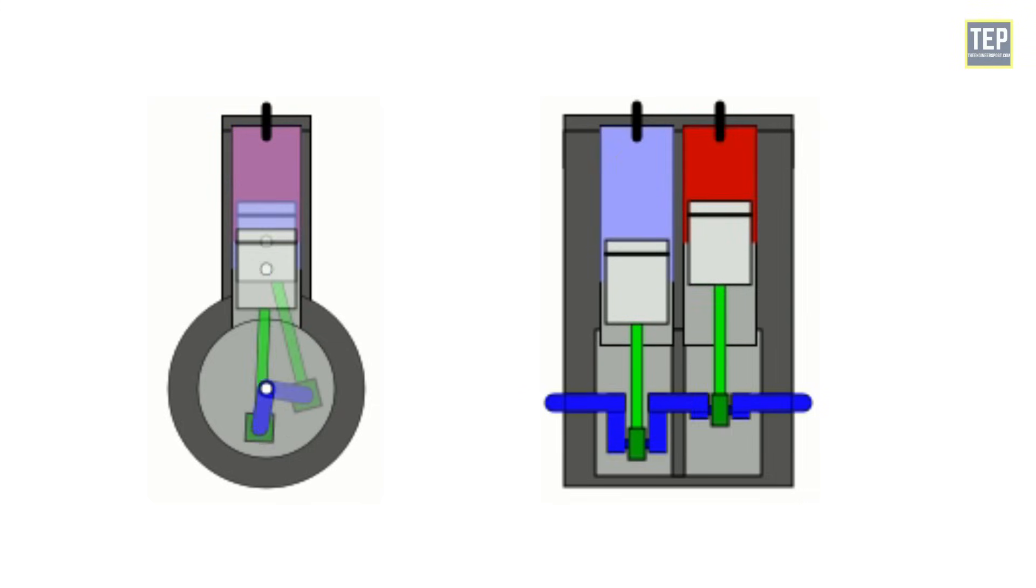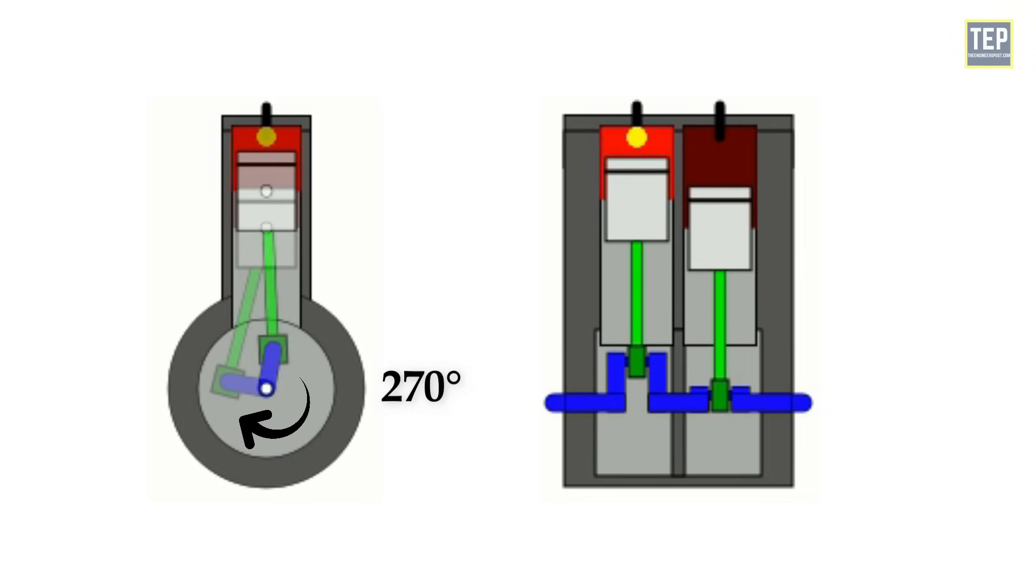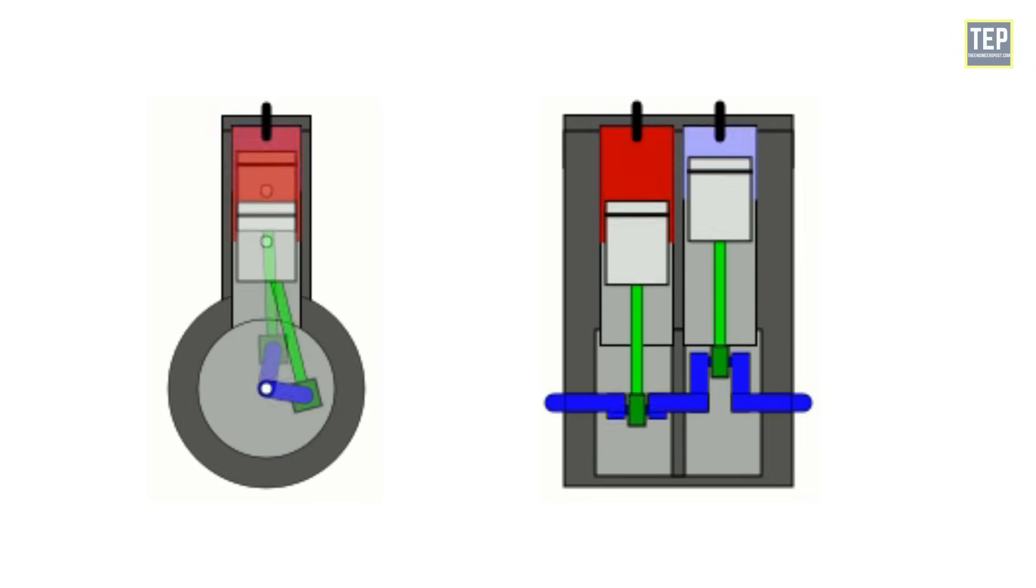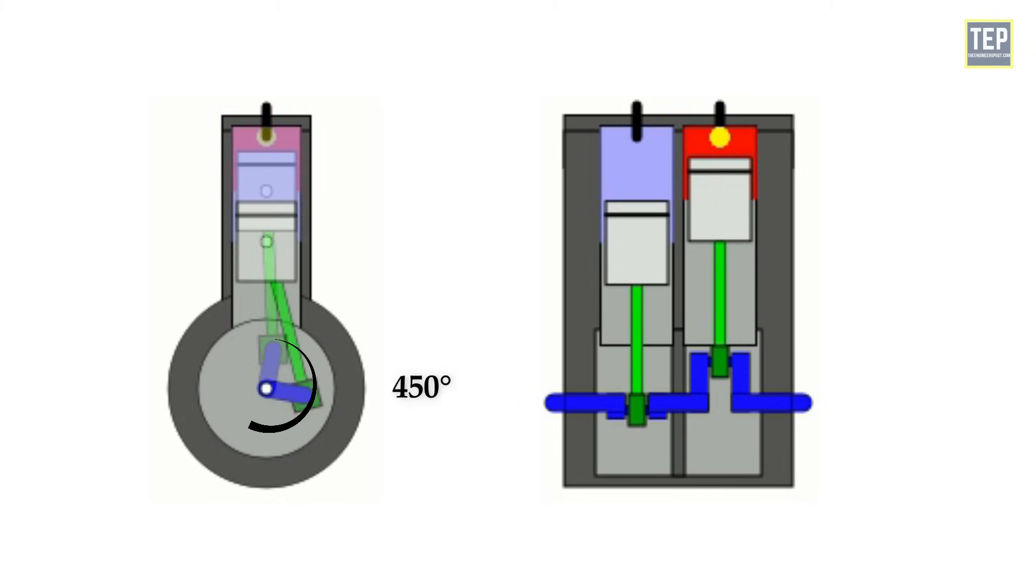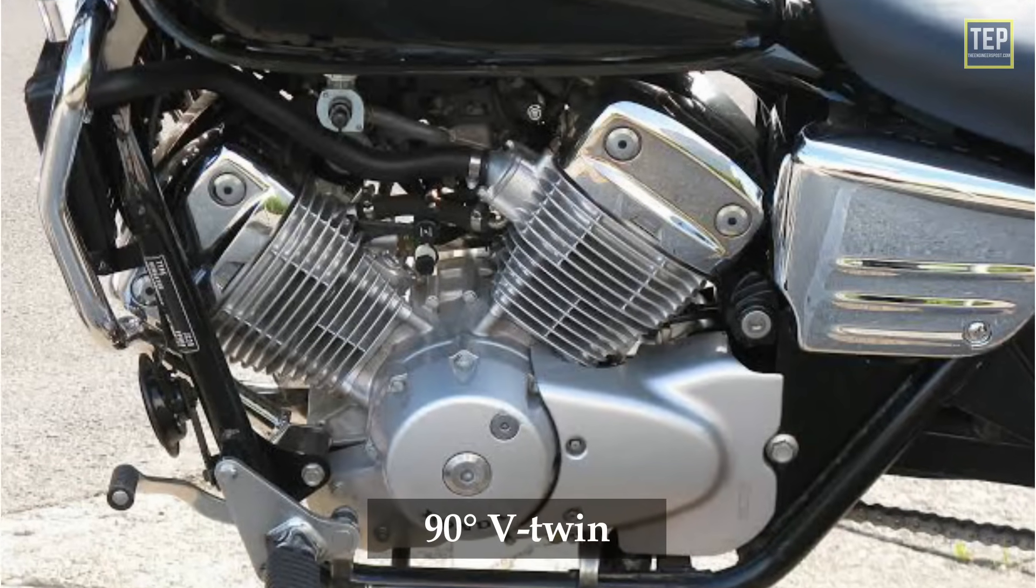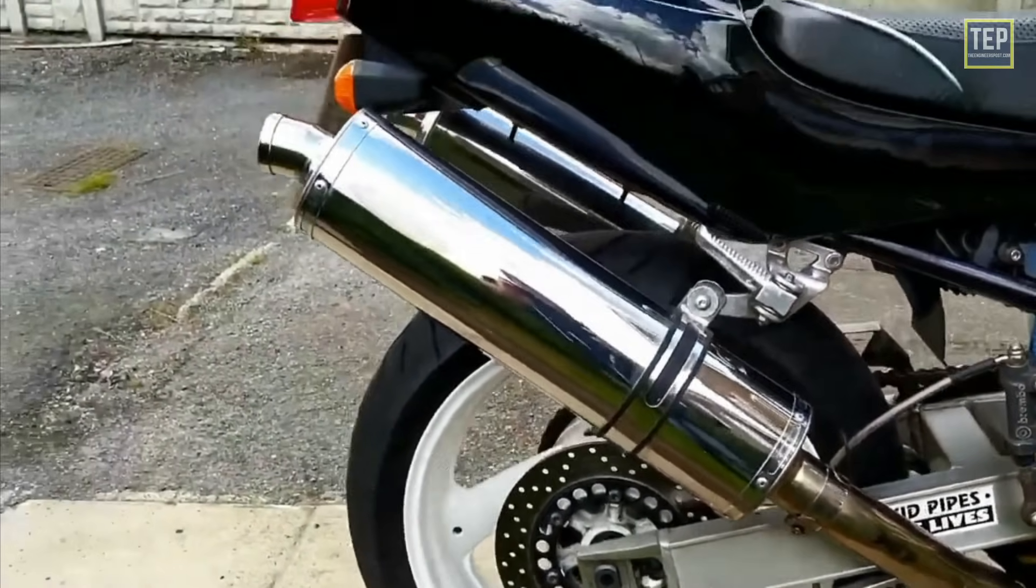In this, the second cylinder fires 270 degrees after the first, followed by a gap of 450 degrees until the first cylinder fires again. This is the same pattern as a 90-degree V-twin engine, and both configurations have a similar pulsing exhaust sound.